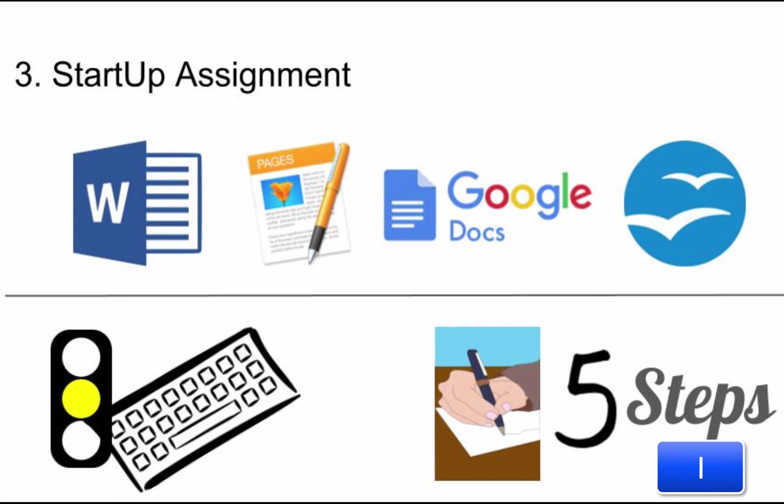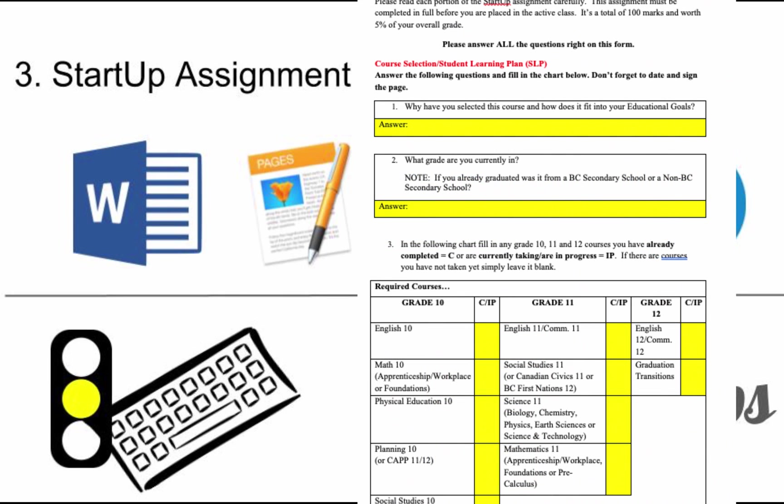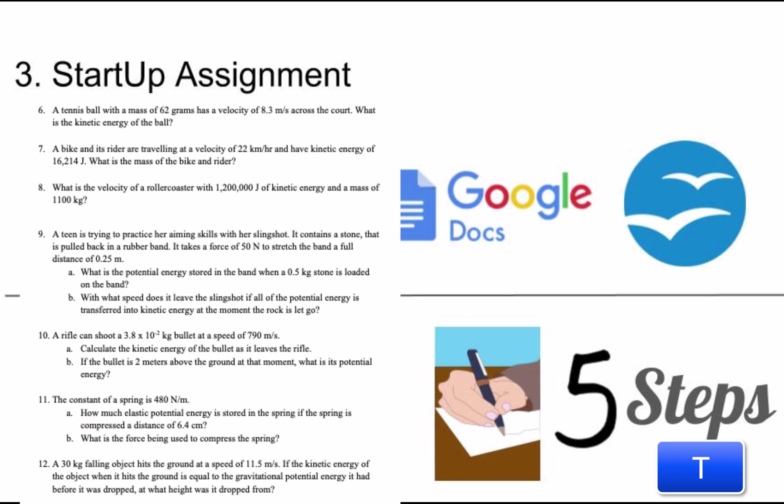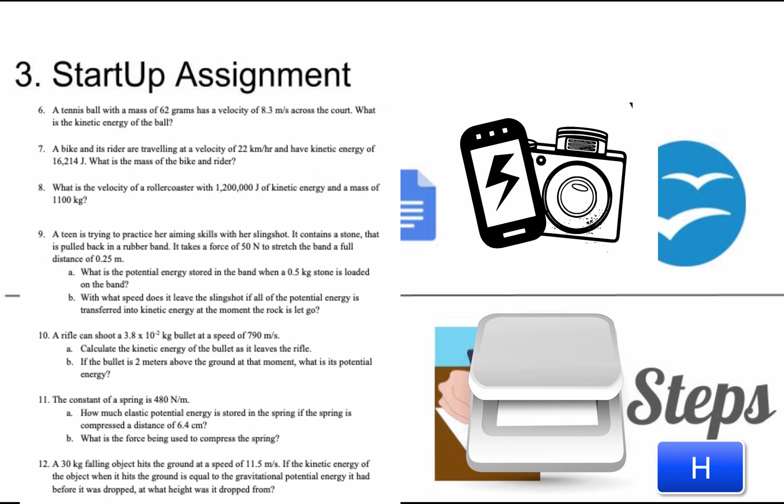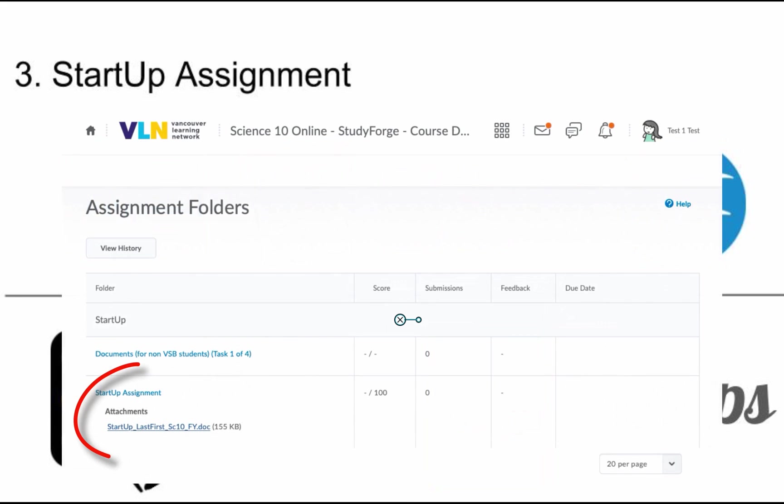Once you download the startup assignment you'll notice that there are yellow sections. These yellow sections you need to complete in a word processing program such as Microsoft Word, Apple Pages, Google Docs, or OpenOffice. The other sections are the physics questions, and these are done with a blank piece of paper and pen or pencil. Once you've done that, take a picture of that work or scan it and then submit both documents into the startup assignment folder.